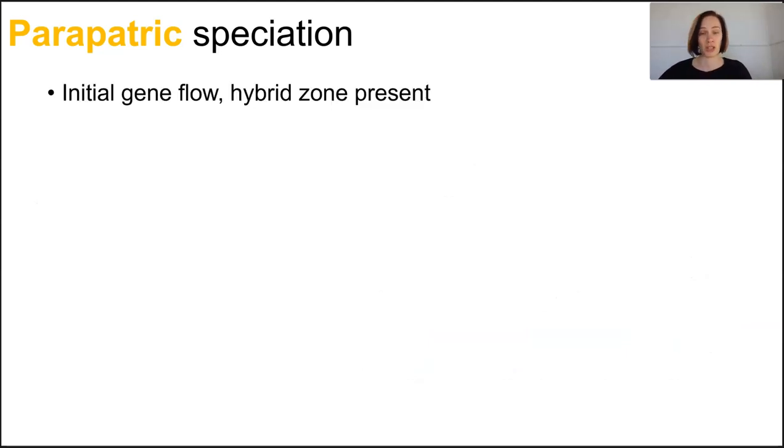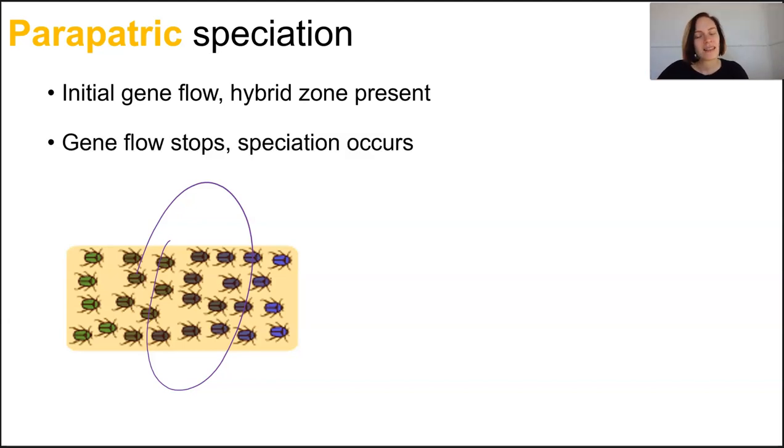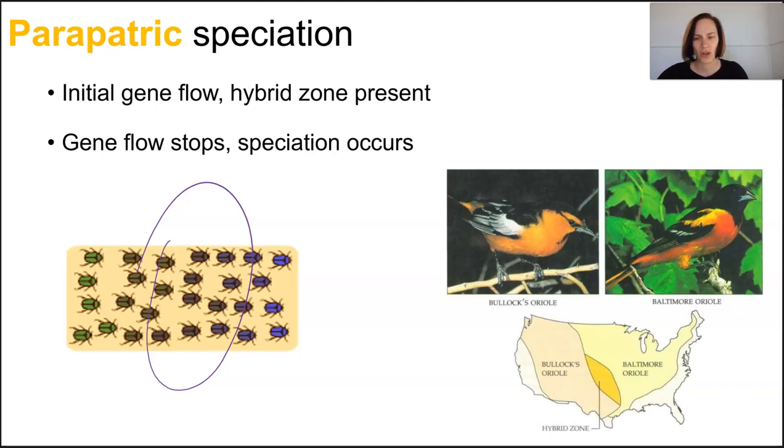Initially there's going to be some gene flow between the subpopulations and a kind of hybrid zone presents itself, but this becomes more difficult over the larger area with non-random mating. Eventually that gene flow stops as fewer organisms mate with one another from different subpopulations, and over time speciation occurs as more changes accrue in their gene pool until they're completely separate species.